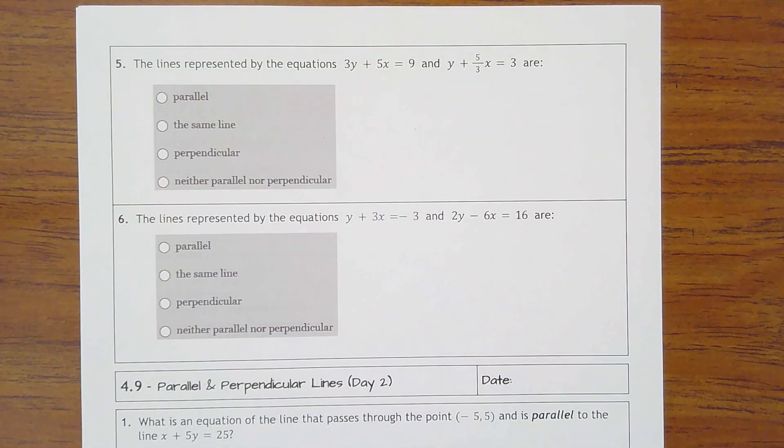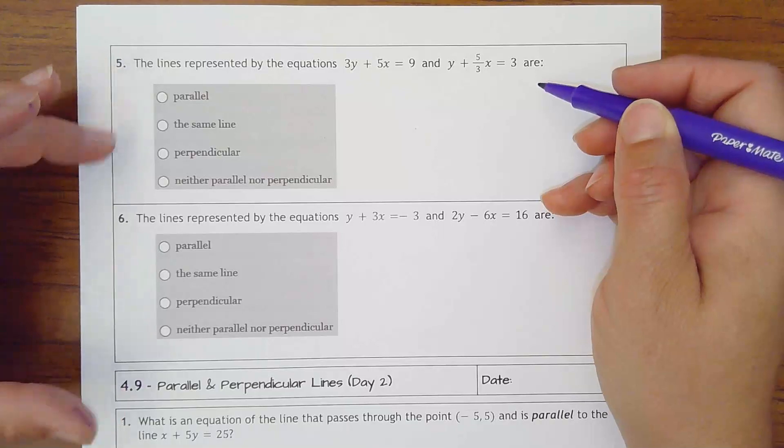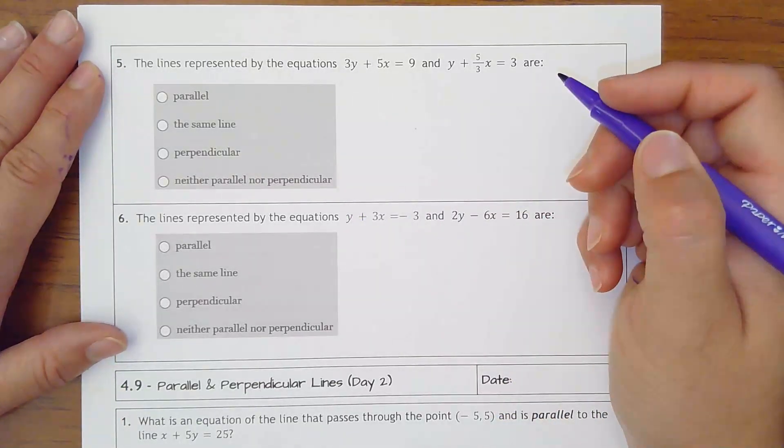a line parallel will also have that same slope of 4 fifths. And then number 5 says the lines represented by these equations are parallel, perpendicular, the exact same line, or neither parallel or perpendicular.